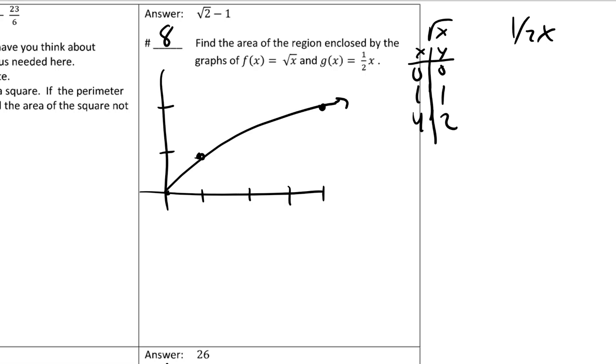And then one half X, this is an MX plus B, so up one to go right two, up one to go right two. So my first sketch was too small for me to see this area, which isn't really the end of the world.